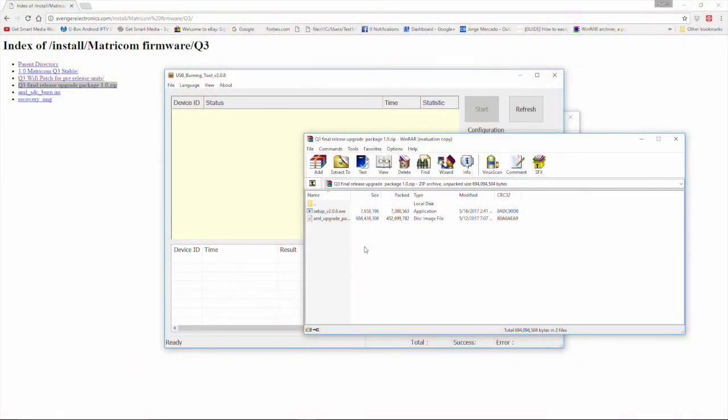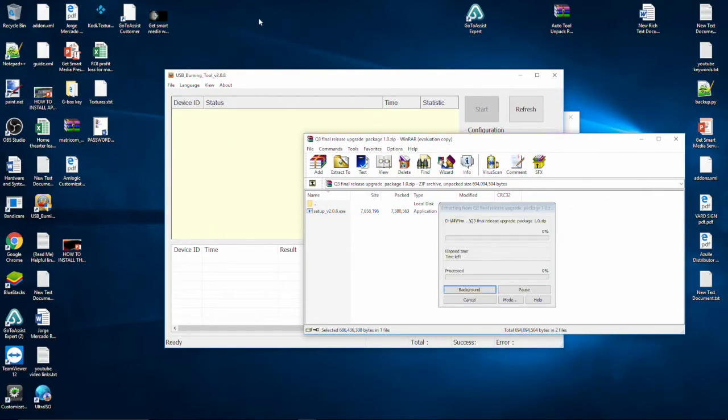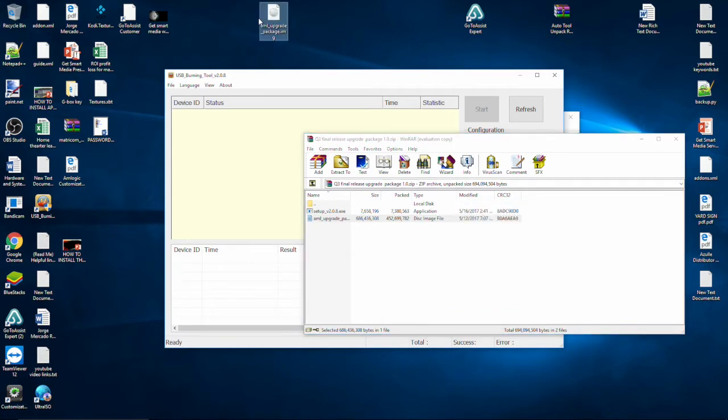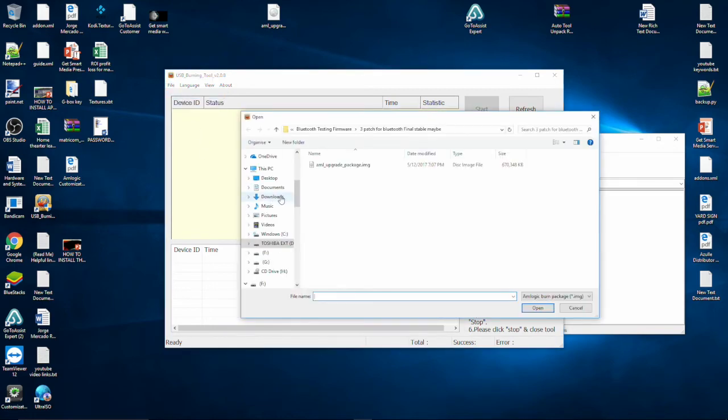So going back to the zip folder, you may want to take this AML upgrade package and extract it to your desktop or anywhere that you can remember that you have it. All right, now that we've extracted the AML upgrade package to our desktop, let's go ahead and load it into the USB burning tool. The first thing you're going to want to do is click on the word File, then click Import Image. So over here we're going to navigate to our desktop and we see the AML upgrade package image right here. So let's open it.